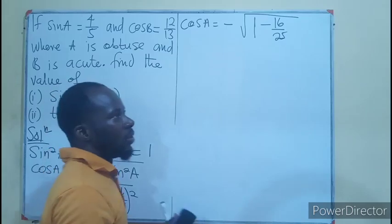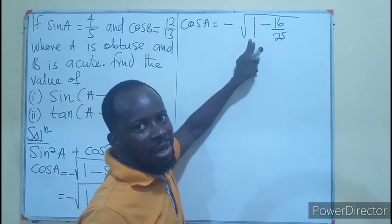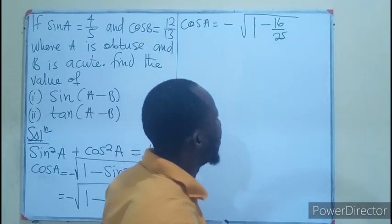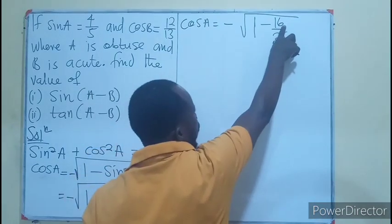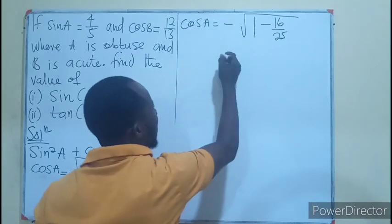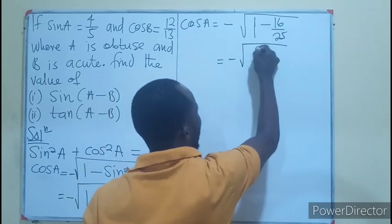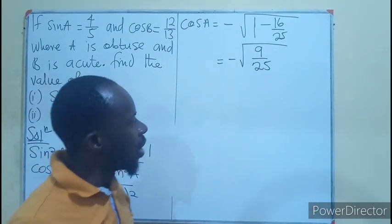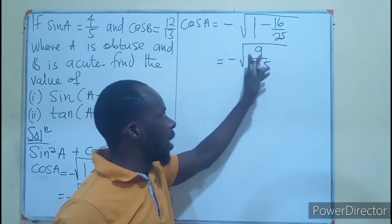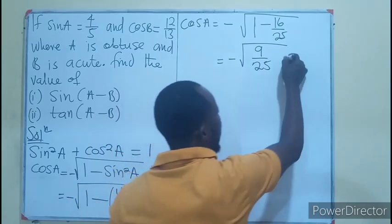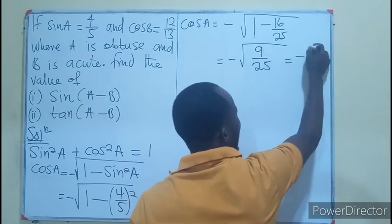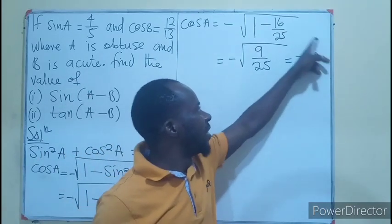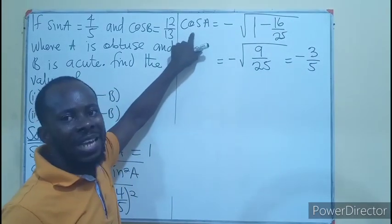Subtracting the fraction from 1: we need a number such that when added to 16 gives 25, which is 9. So cos A = −√(9/25) = −√9 / √25 = −3/5. So cos A = −3/5.